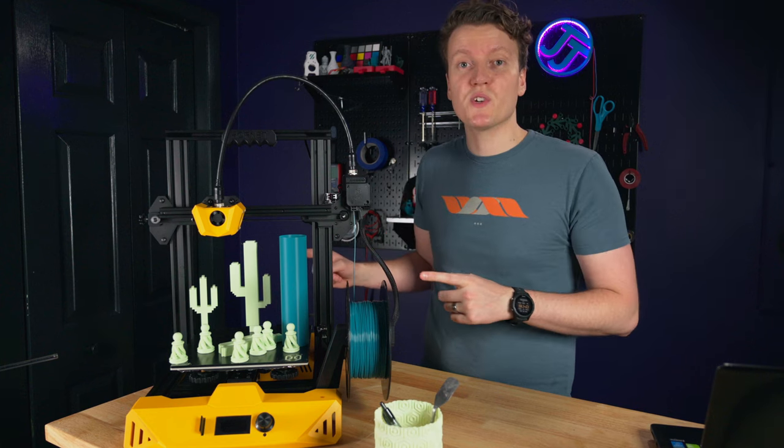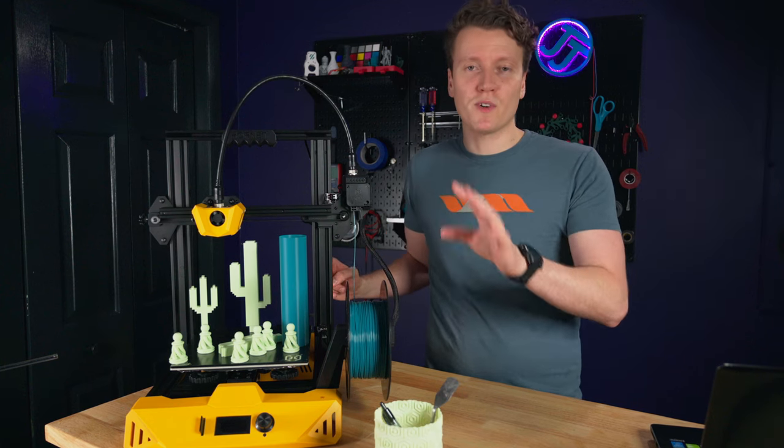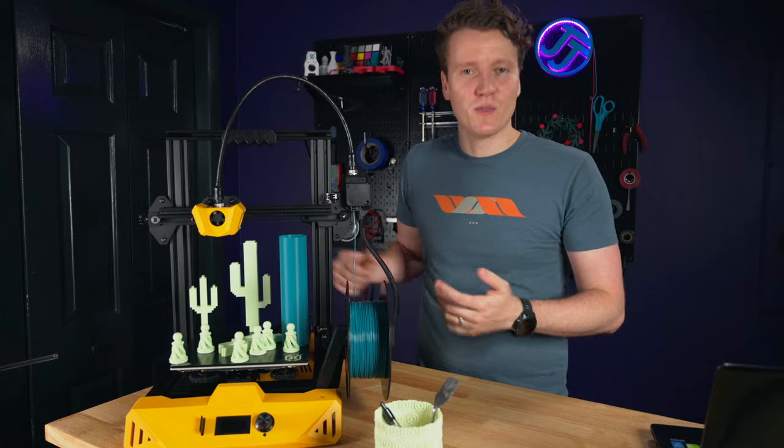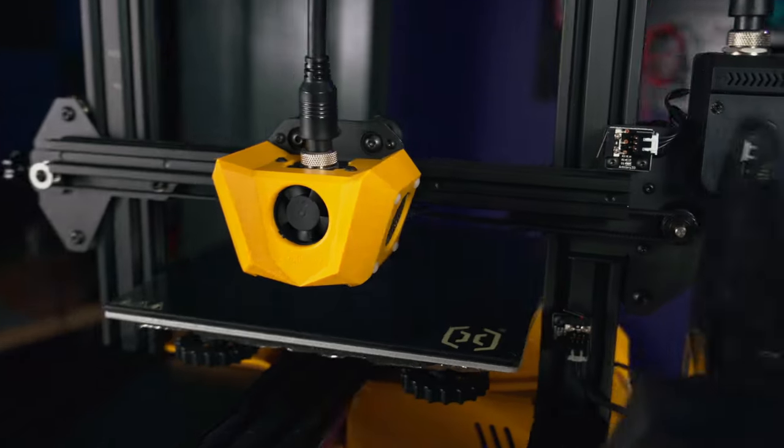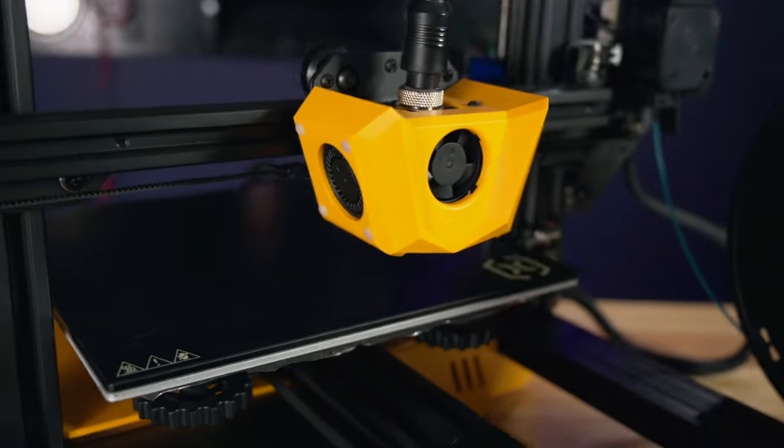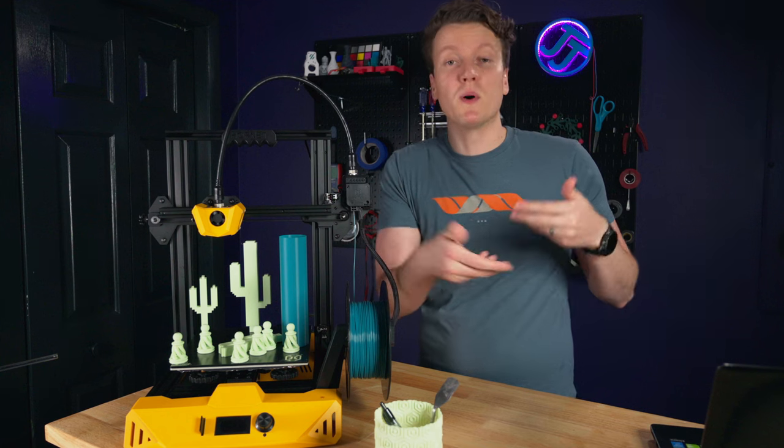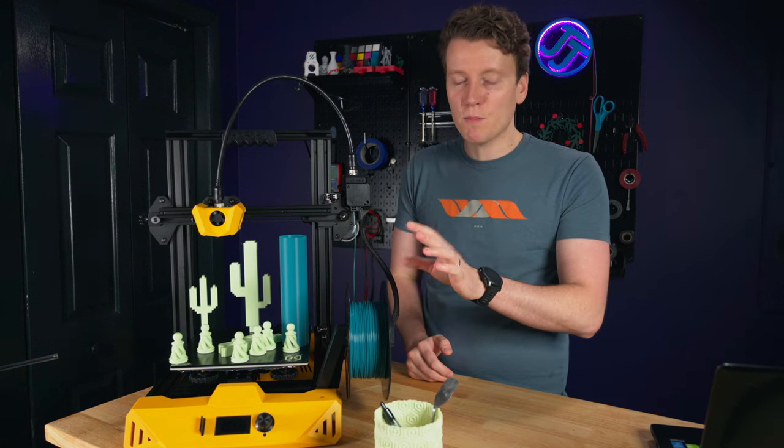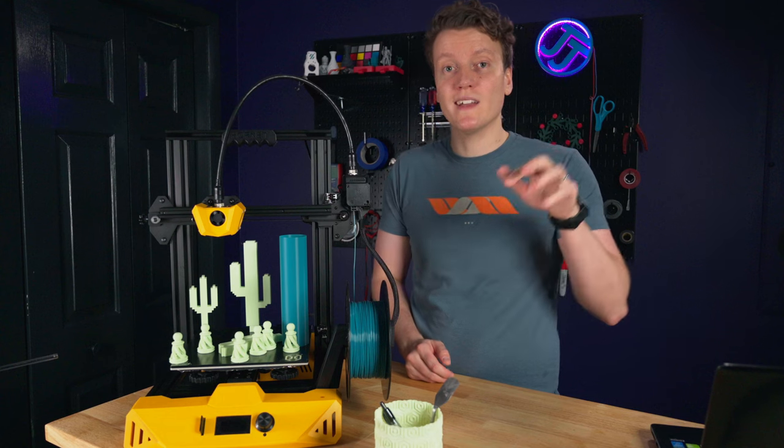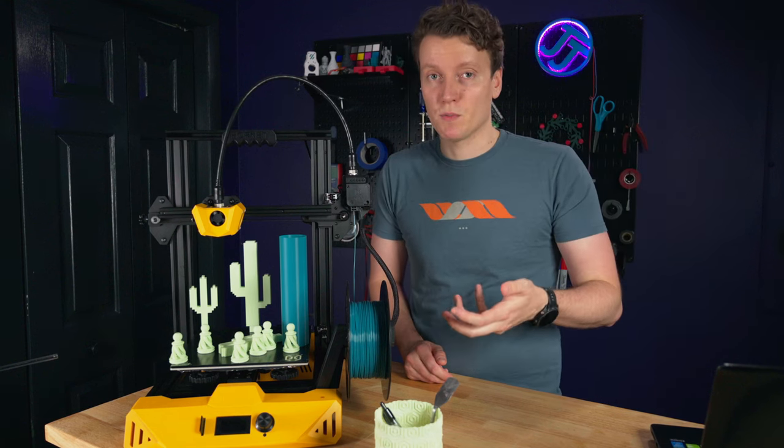Next up, there are so many things on this printer that are normally the most common first modded things you add to a 3D printer. First off, you've got dual part cooling fans. So there's two separate fans with two separate ducts cooling both sides of your print at the same time.